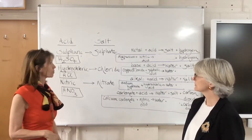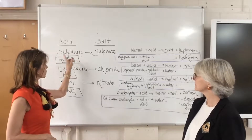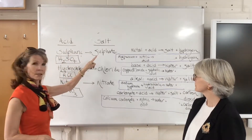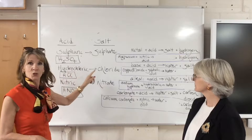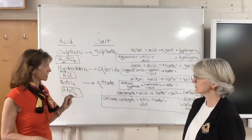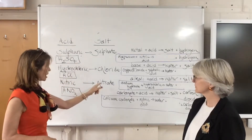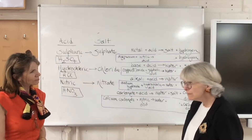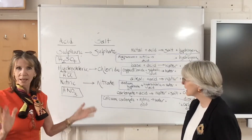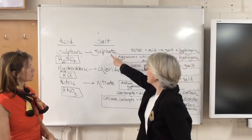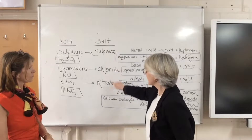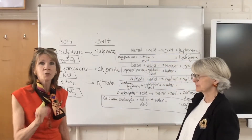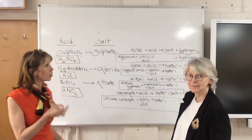So sulfuric acid gives you sulfate, hydrochloric gives you chloride, and nitric gives you nitrate. Why do these have different endings — '-ate', '-ate', and '-ide'? You need to look at the formula of the acids.